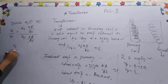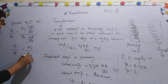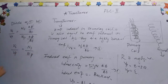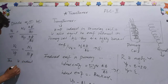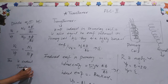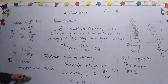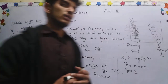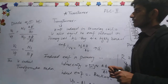We have got a relation: the voltage in the secondary coil over the voltage in the primary coil equals the number of turns in the secondary coil over the number of turns in the primary coil. This is called the transformation ratio. Today we have discussed the Transformer, and in the next class we will continue with more on this topic.